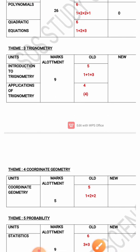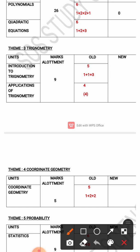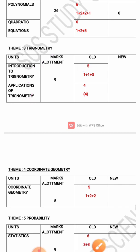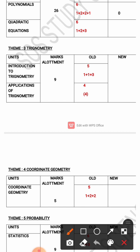Theme 3 is Trigonometry. The lessons under this theme are Introduction to Trigonometry and Applications of Trigonometry. The total marks allotment for this theme is 9 marks. In the previous year's paper, Introduction to Trigonometry was allotted 5 marks and Applications of Trigonometry was allotted 4 marks. You can also note the number of questions given from both lessons.